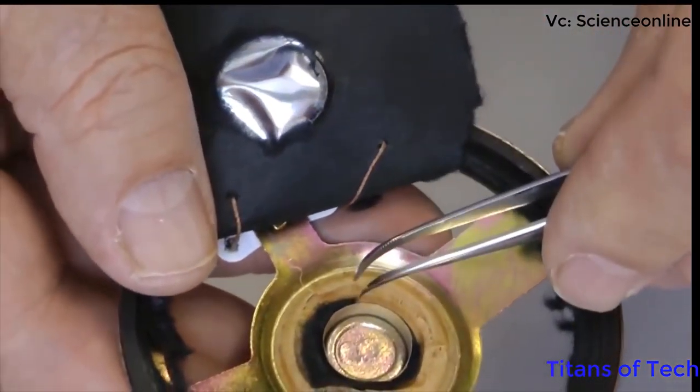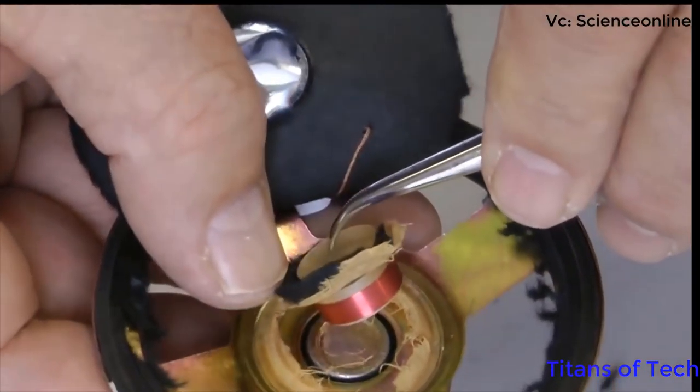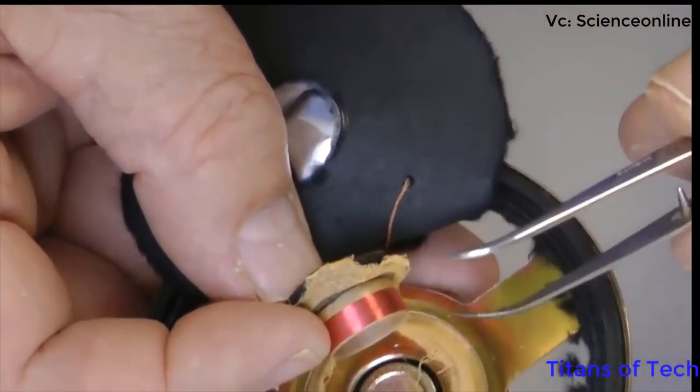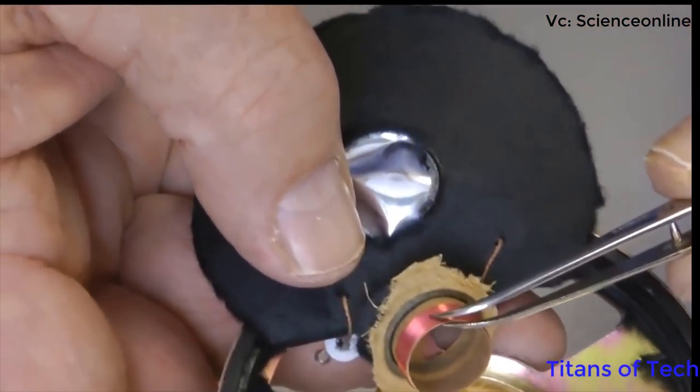A speaker typically has a powerful permanent magnet mounted on the back. Inside the speaker, an electromagnetic coil is suspended inside the permanent magnet.